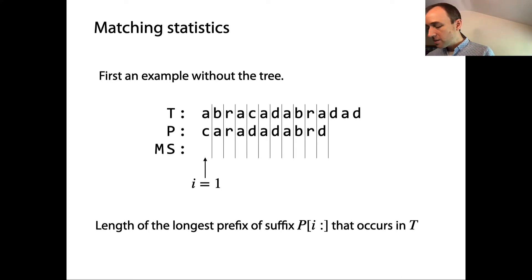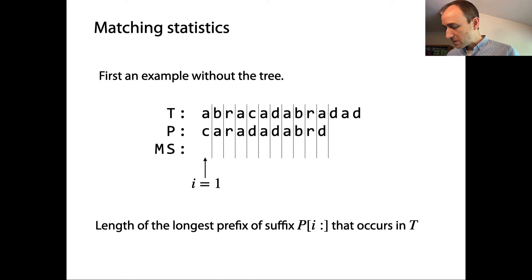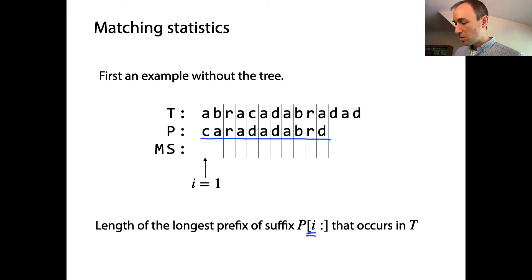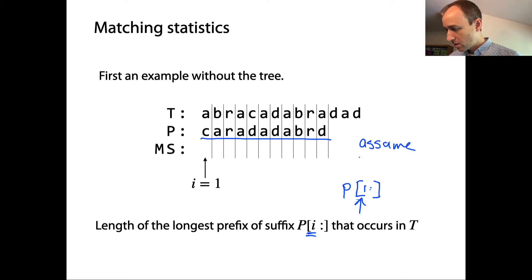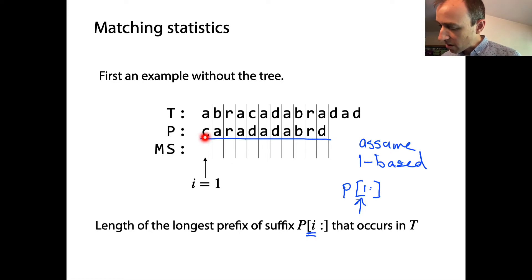Let's do this step by step, starting with i equals one. We're using one-based indexing in this example. The suffix starting at i=1 is the entire string P. What's the length of the longest prefix of this that occurs in T? The prefix consisting of just the character 'c' — does that occur in T? Yes, there are c's in the text, so it's going to be length at least one. Maybe there's a 'ca' in the text — if so, the matching statistic goes up by one.